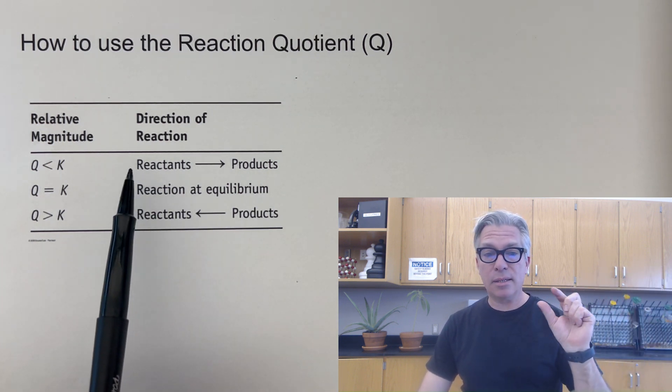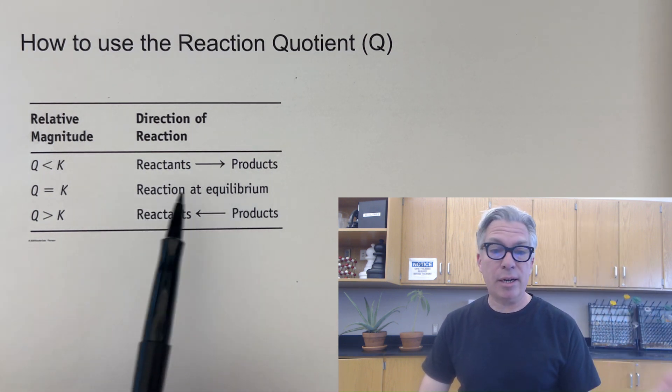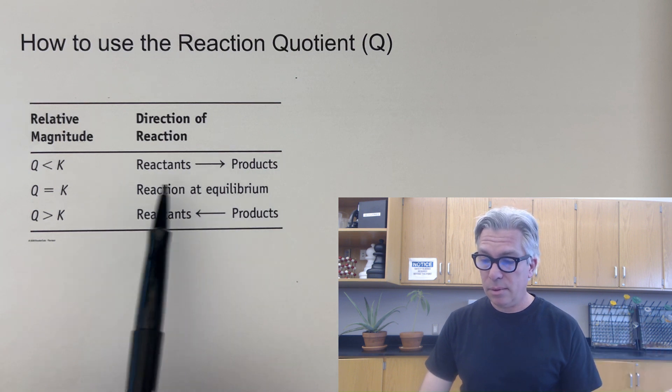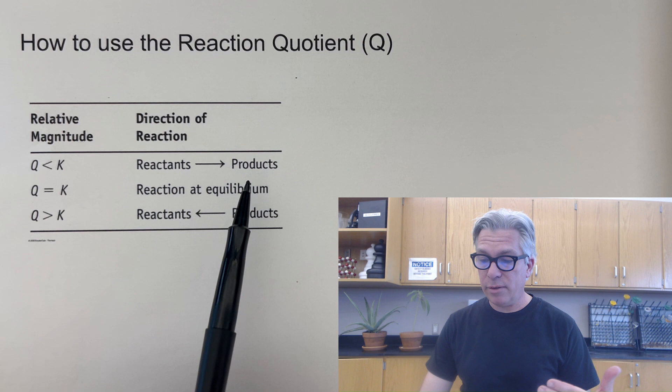And it has to get to a higher ratio. That means taking some of the reactants on the bottom and producing some more products, which would go on the top and we would get a larger number for it. So we're going to go shifting to the right if Q is less than K.